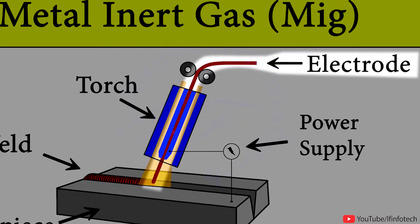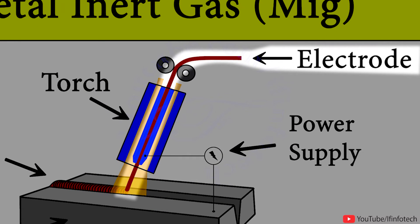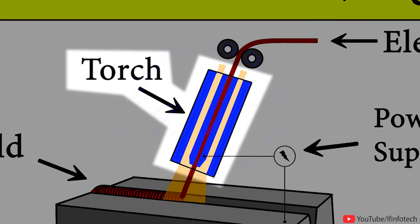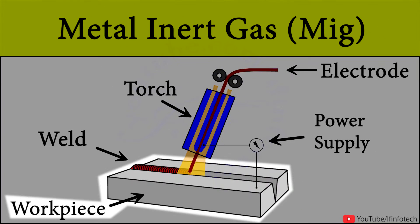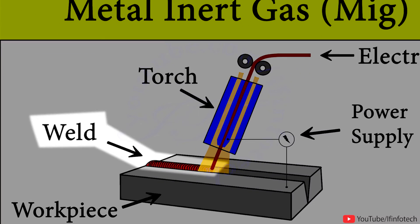In this process, continuous solid wire electrode is heated and fed into the weld pool from a welding gun. The two base materials are melted together forming a joint.